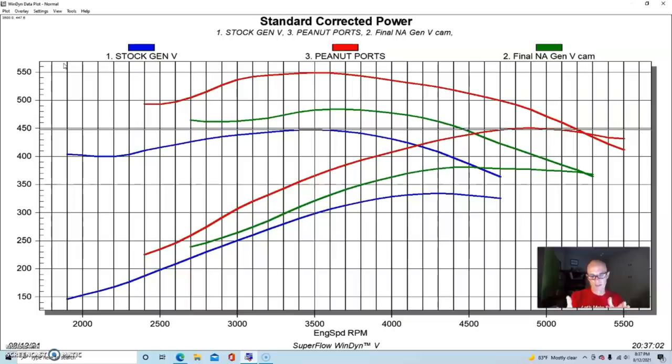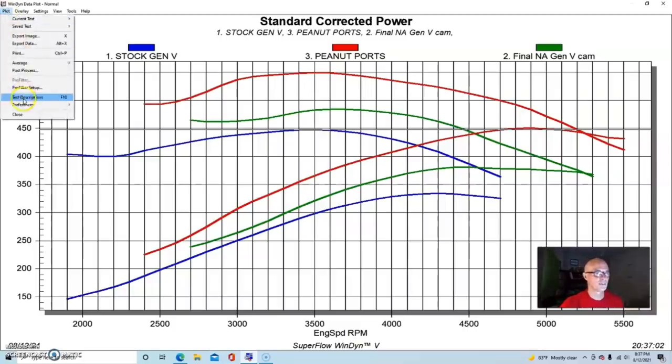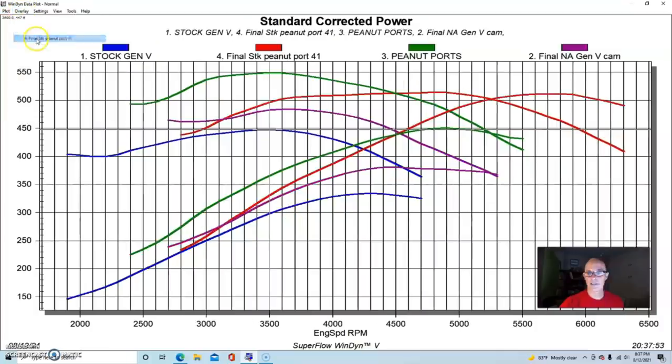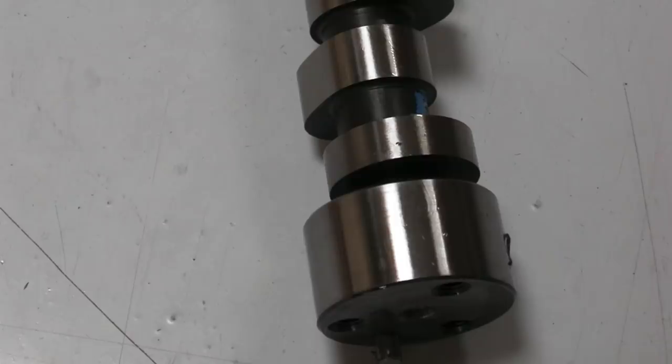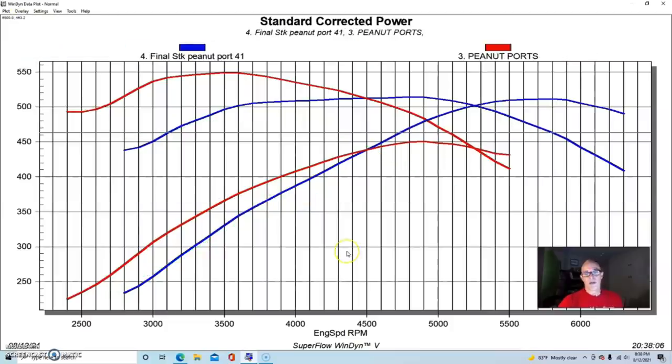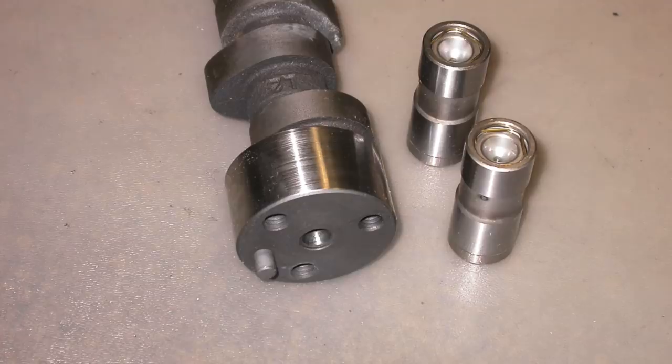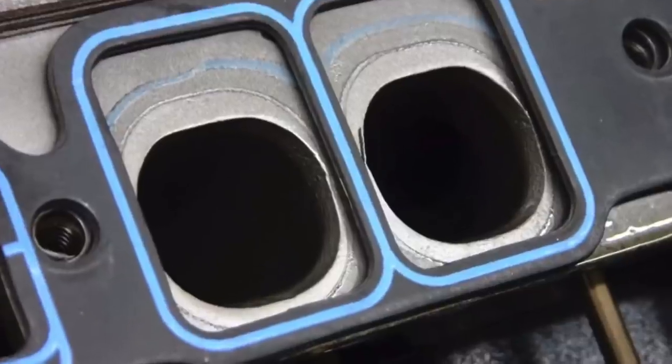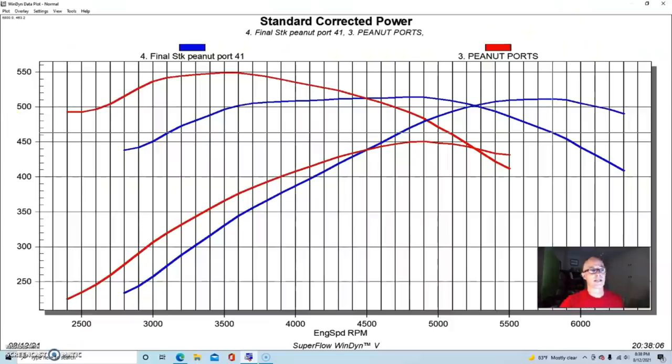The other thing that we did was change the camshaft dramatically. I'm going to show you, we changed the cam. I'll get rid of the stock stuff so we can compare. This is the difference between our 450 horse version with the 268 cam and the peanut port heads, and then our peanut port heads with a much bigger camshaft.